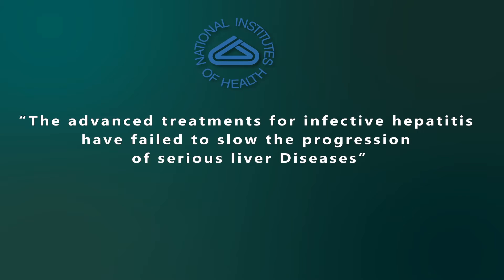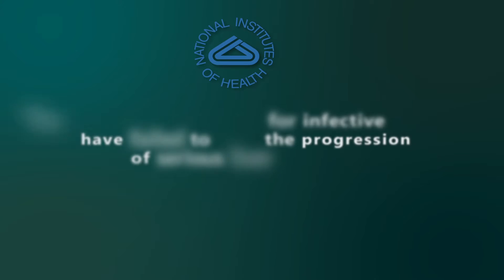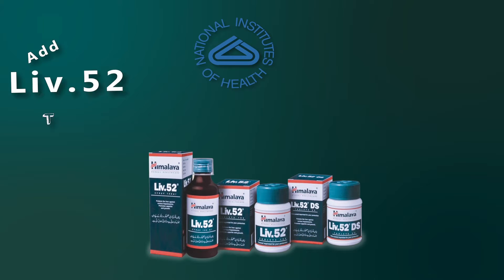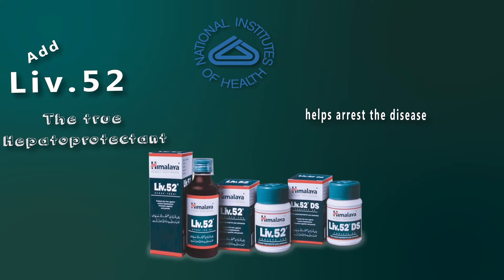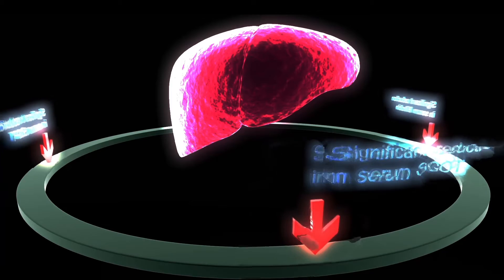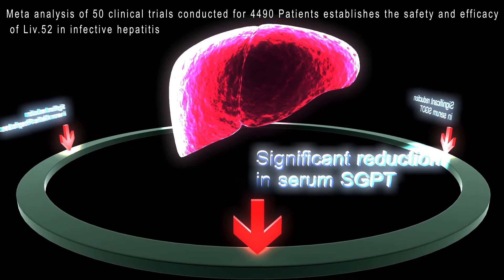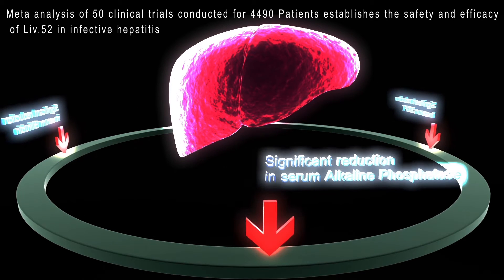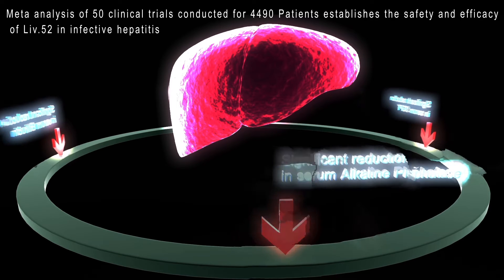According to the National Institute of Health, America, advanced treatments of infective hepatitis have failed to slow the progression of serious liver diseases. LIV-52, when added with advanced therapies, helps arrest disease progression and supports the liver to perform at its best. A meta-analysis on 4,490 patients proved the efficacy and safety of LIV-52 in infective hepatitis by significantly decreasing SGPT, SGOT, alkaline phosphatase, and bilirubin levels in the blood.